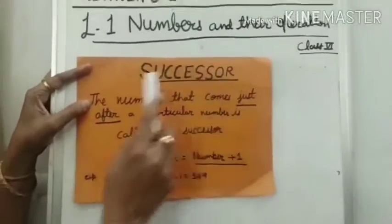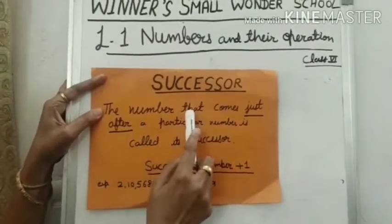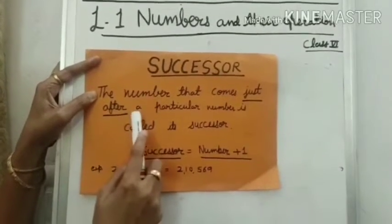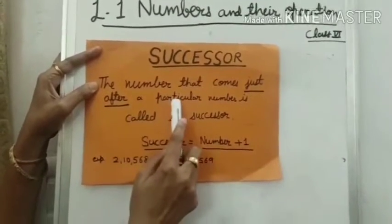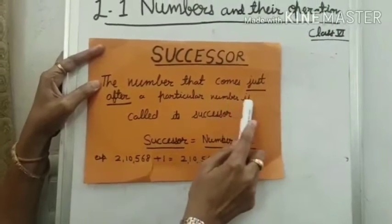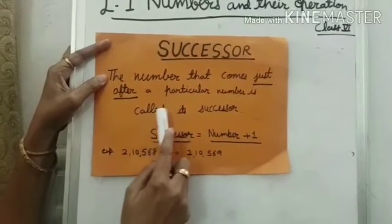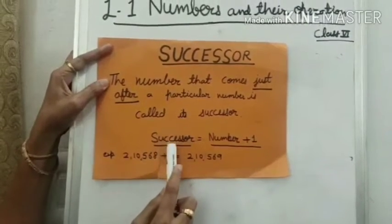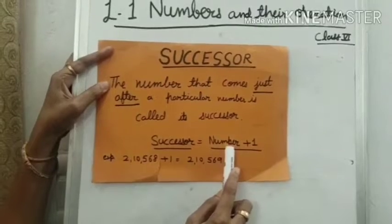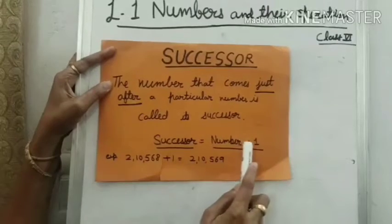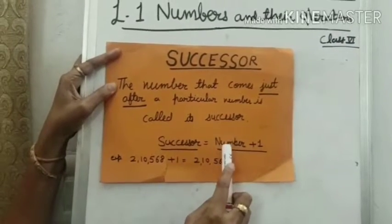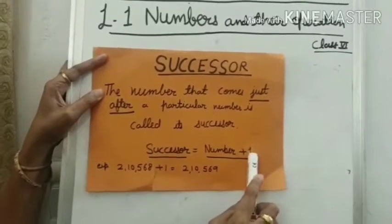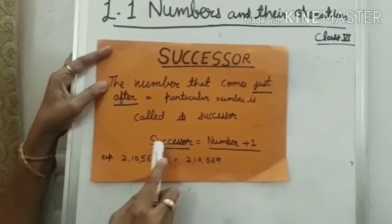Successor: the number that comes just after a particular number is called its successor. This means successor is equal to the given number plus 1. First write the given number, then add plus 1. The answer is the successor.